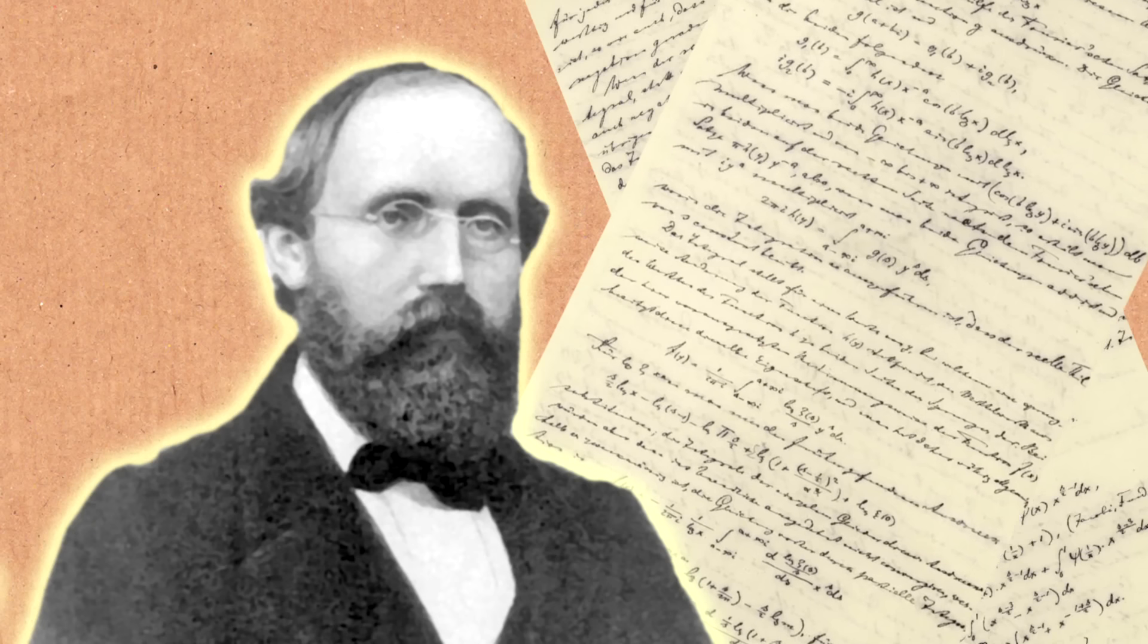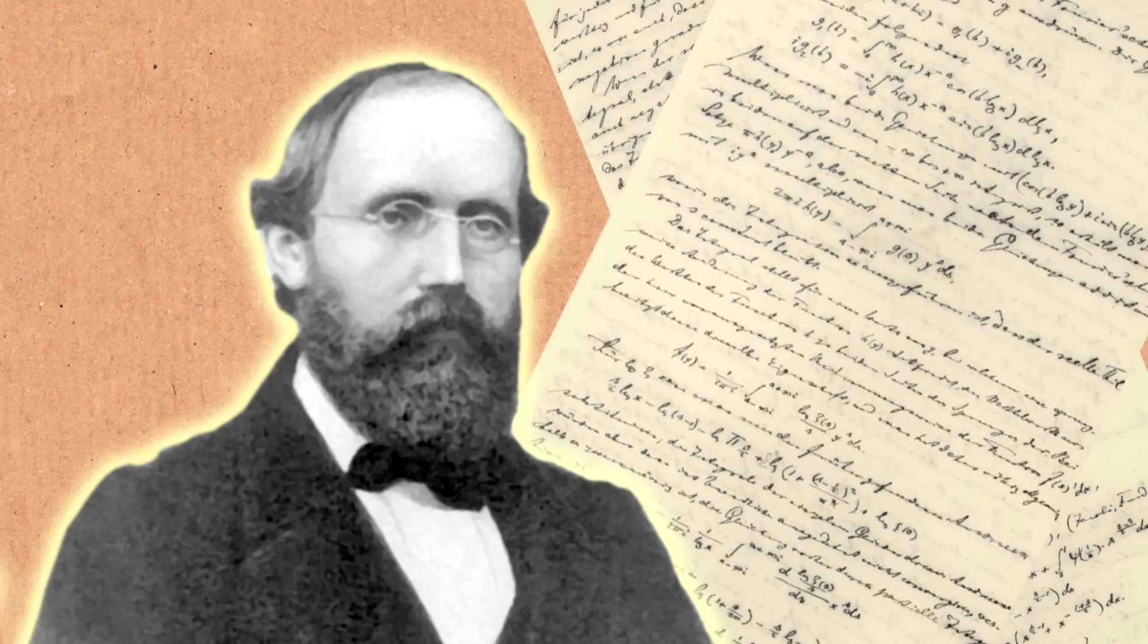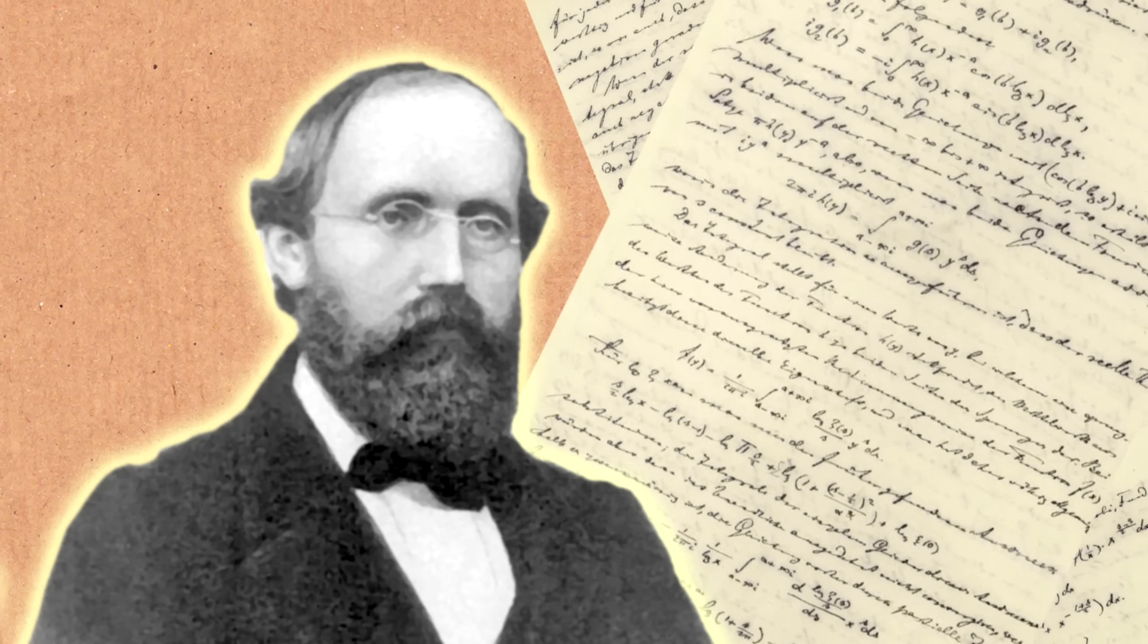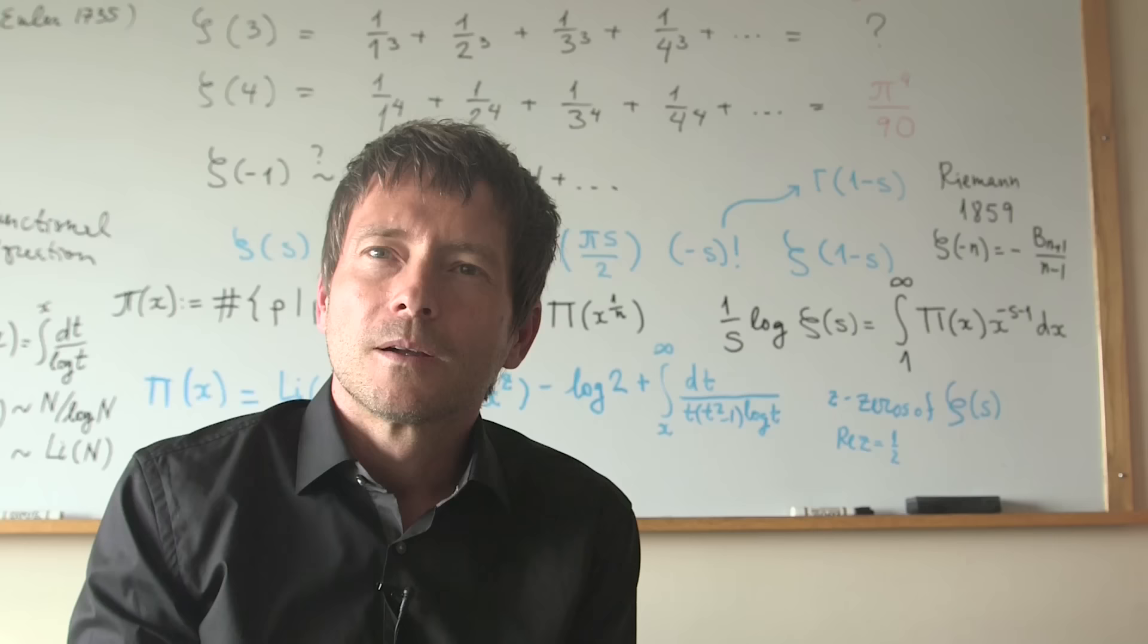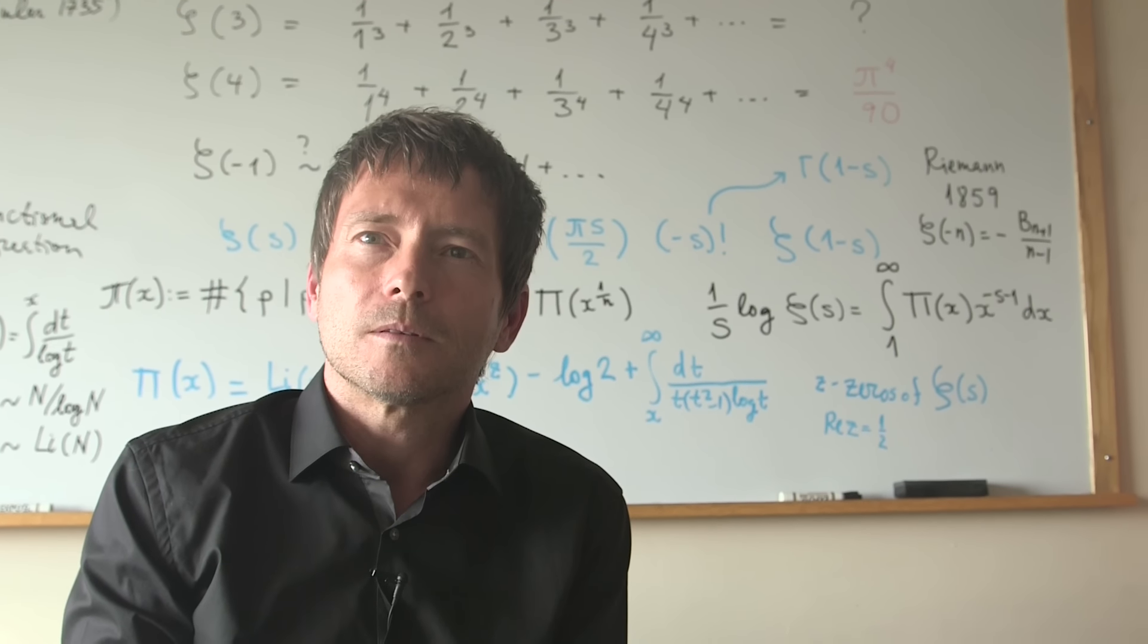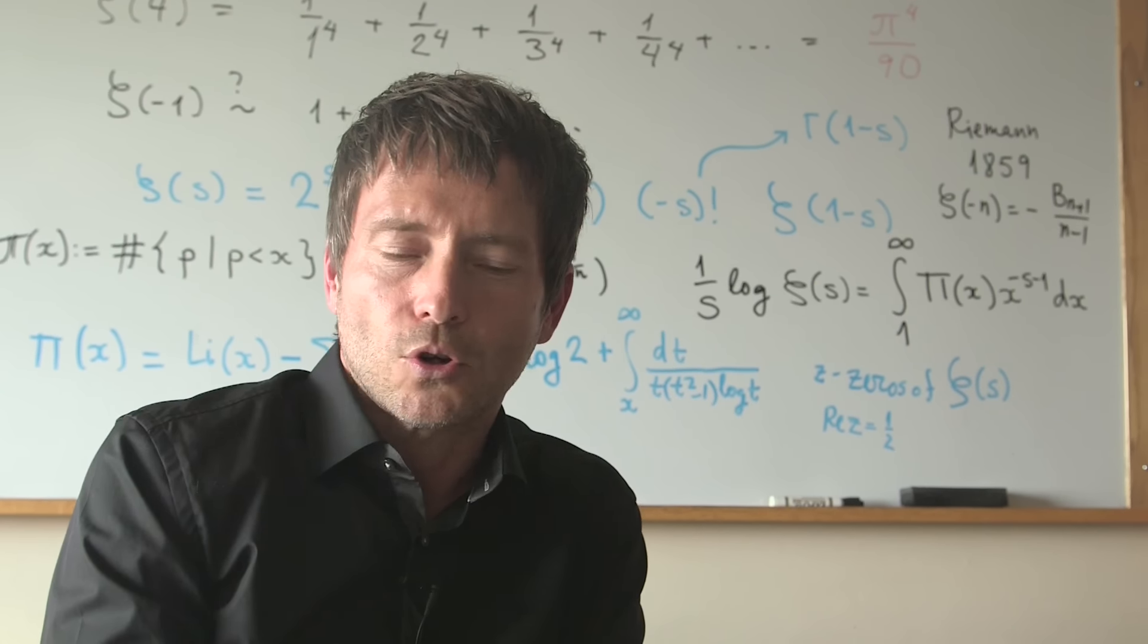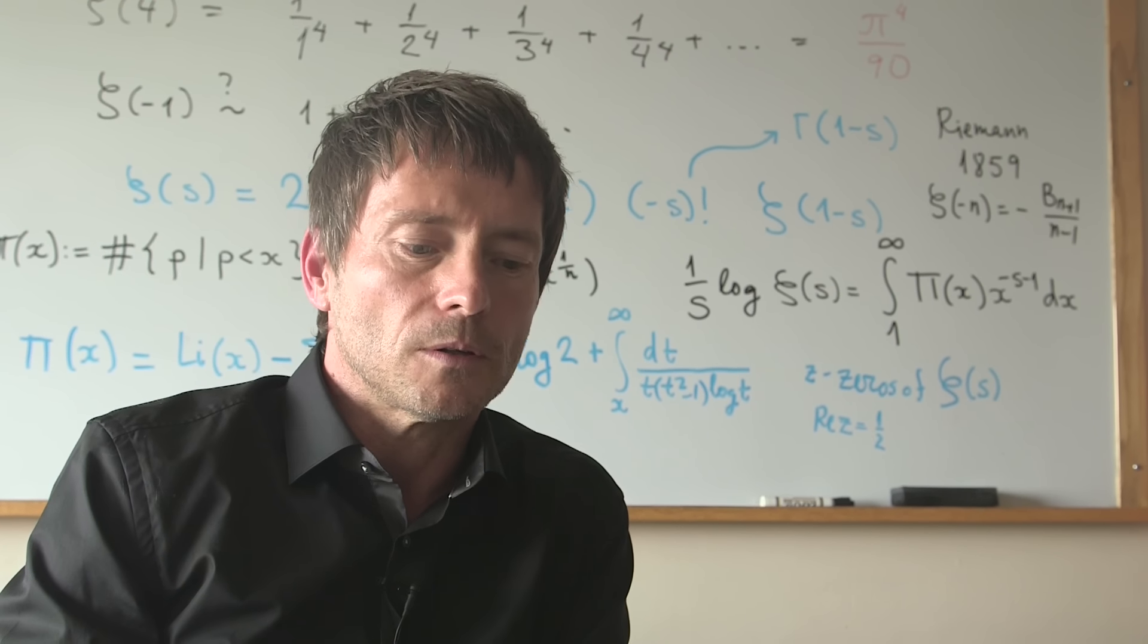In other words, he was trying to guess what could be a possible way to assign a value. And in the process of trying to assign values to this series, and other similar series, he actually came up with the right answers, which were justified later by other mathematicians. For example, Bernard Riemann, a German mathematician, but that was like a hundred years later. So it seems that Euler was way ahead of his time. You can get to minus 1 over 12 in more than one way.